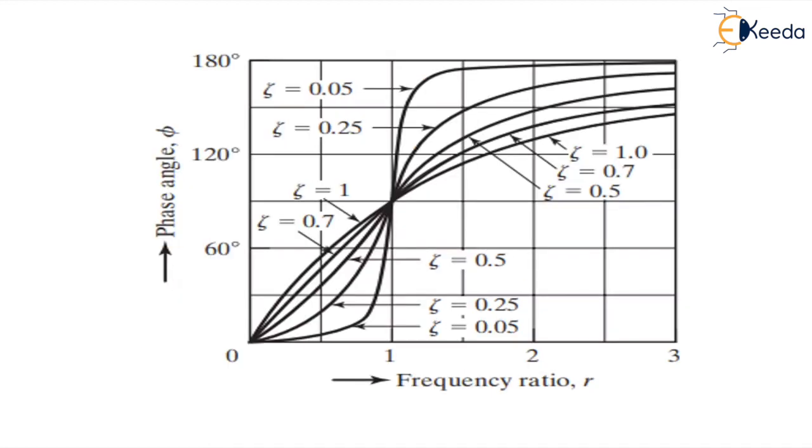If we plot a graph between the frequency ratio, which is ω upon ωn, and the phase angle φ, we see that when ω upon ωn is 0, the phase angle is also 0. As the frequency ratio increases, the phase angle also increases. When frequency ratio is 1, the phase angle is 90 degrees. Up to the value 3, the phase angle increases up to 180 degrees. Vibrometers are actually working in the range of greater than or equal to 3 for ω upon ωn. Beyond this value, the phase angle will be 180 degrees.